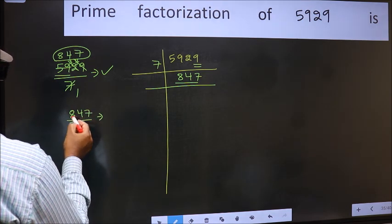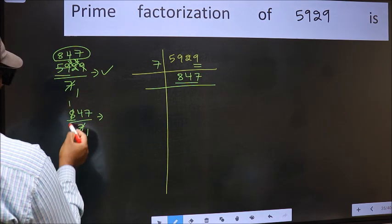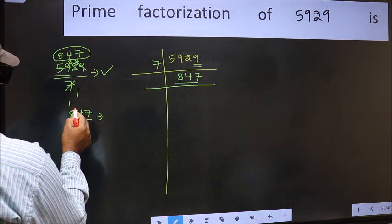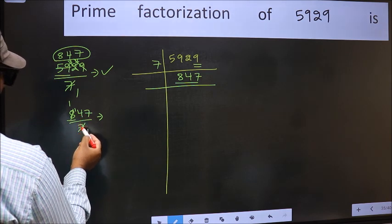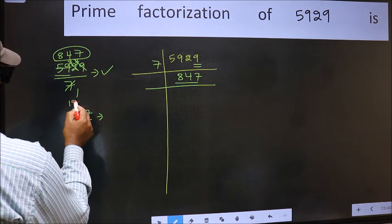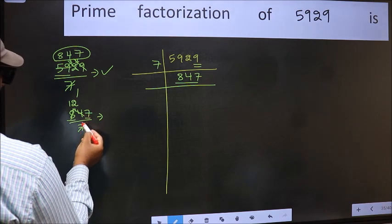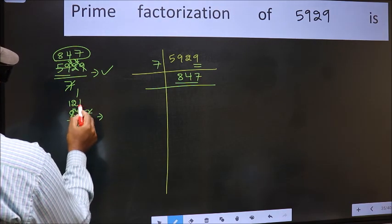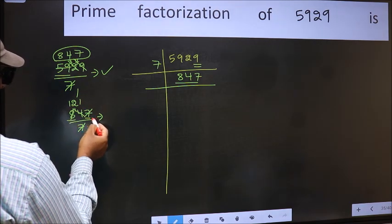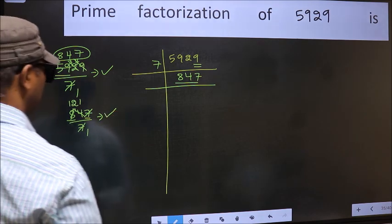A number close to 8 in 7 table is 7 times 1, 7. 8 minus 7 is 1. 1 carried forward, 14. When do we get 14 in 7 table? 7 times 2 is 14. The other number 7. When do we get 7 in 7 table? 7 times 1, 7. No number has been left out, so this is divisible by 7.